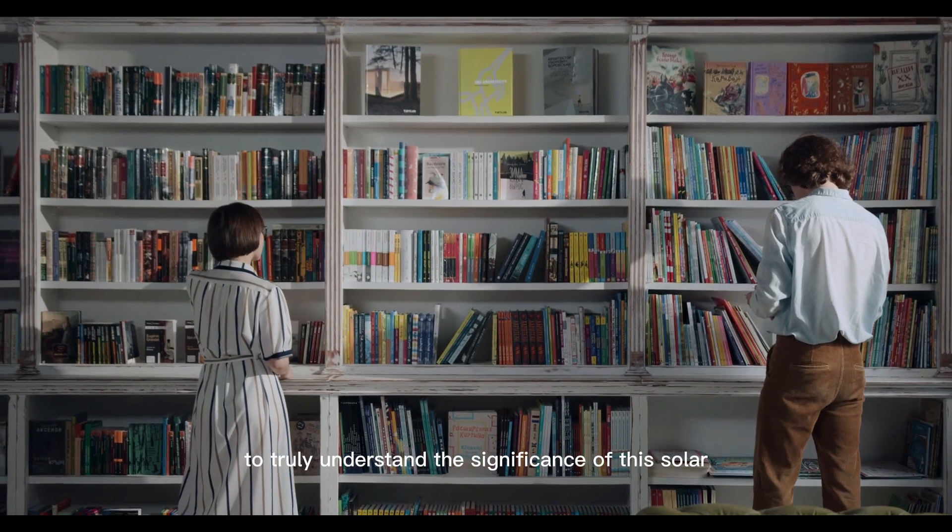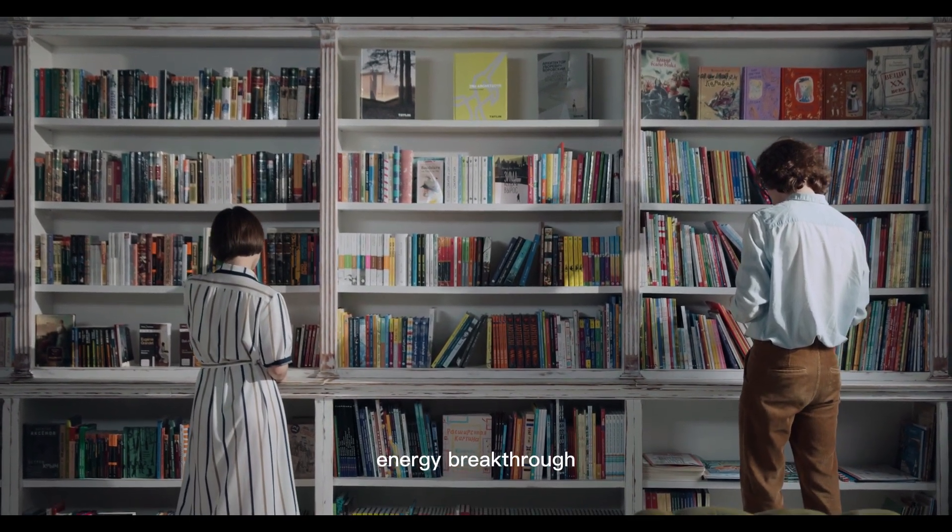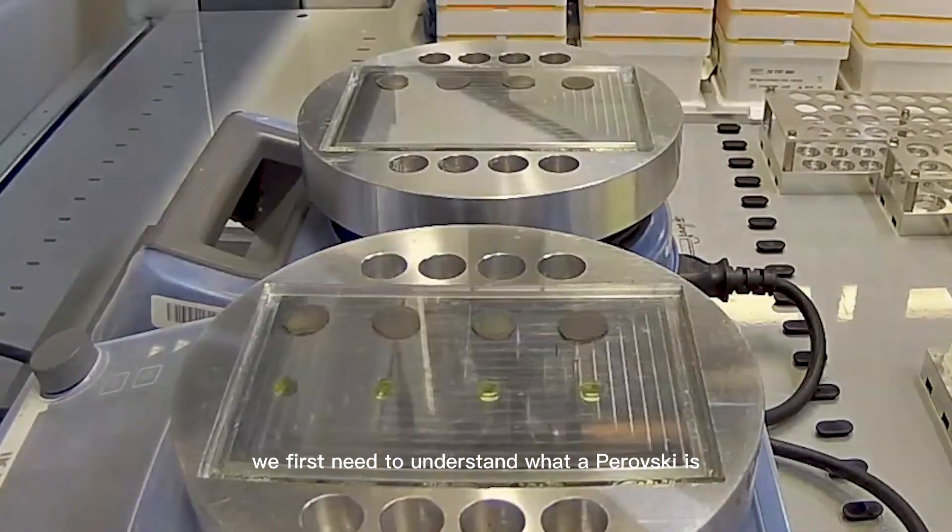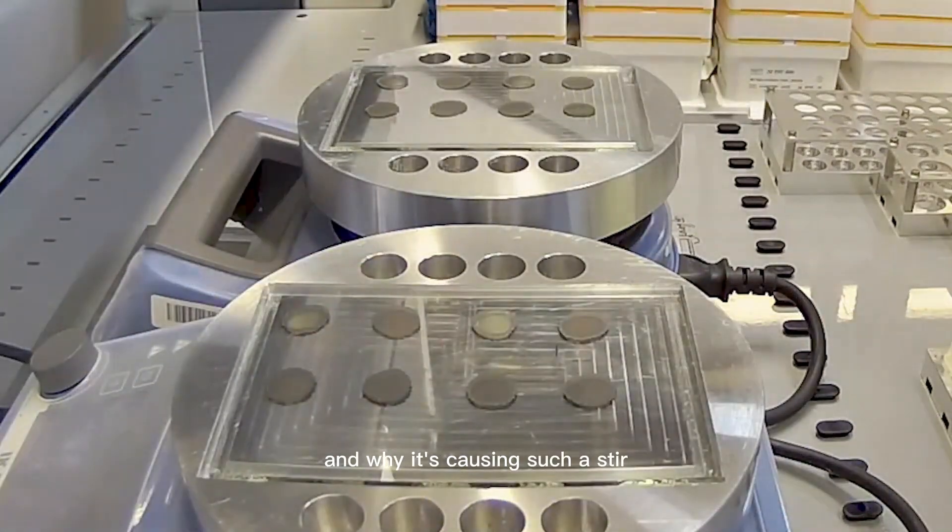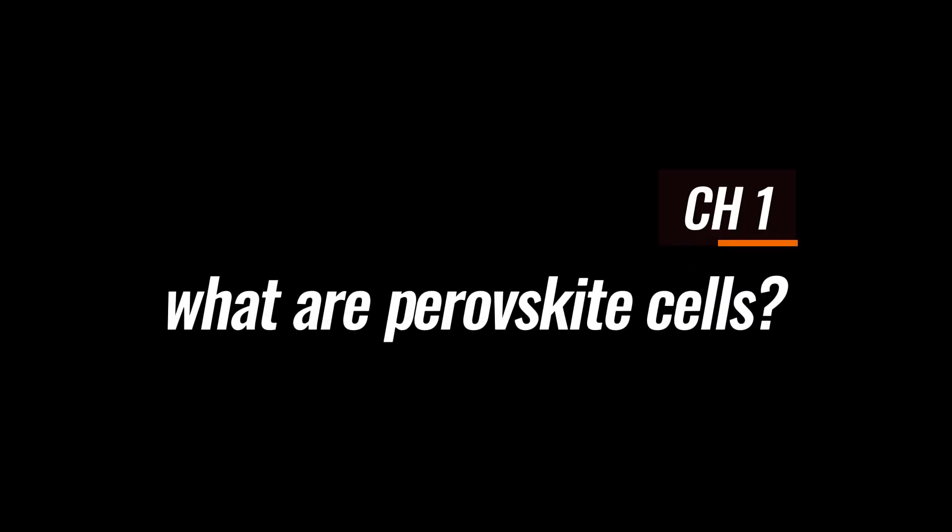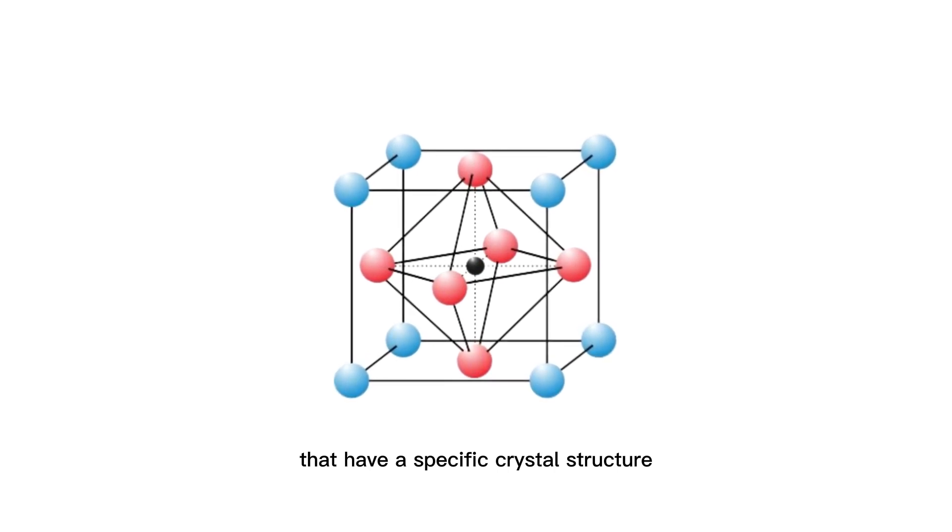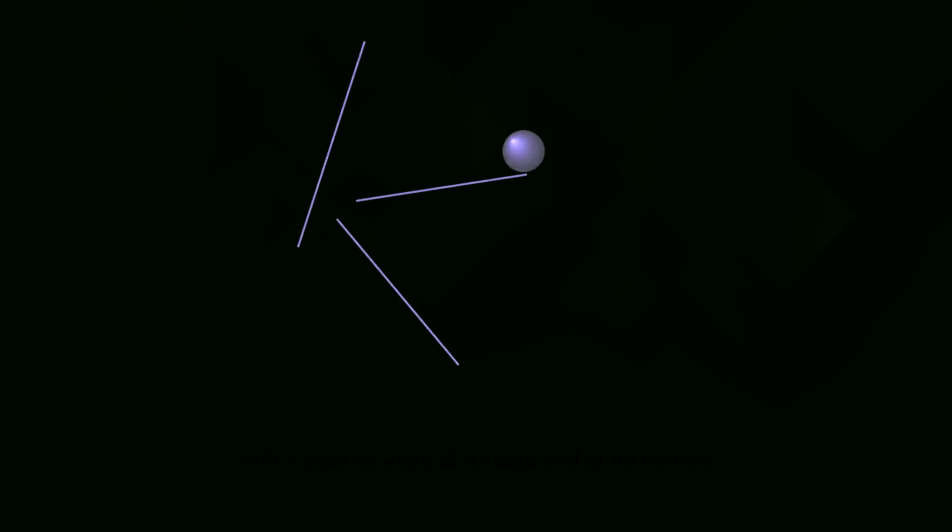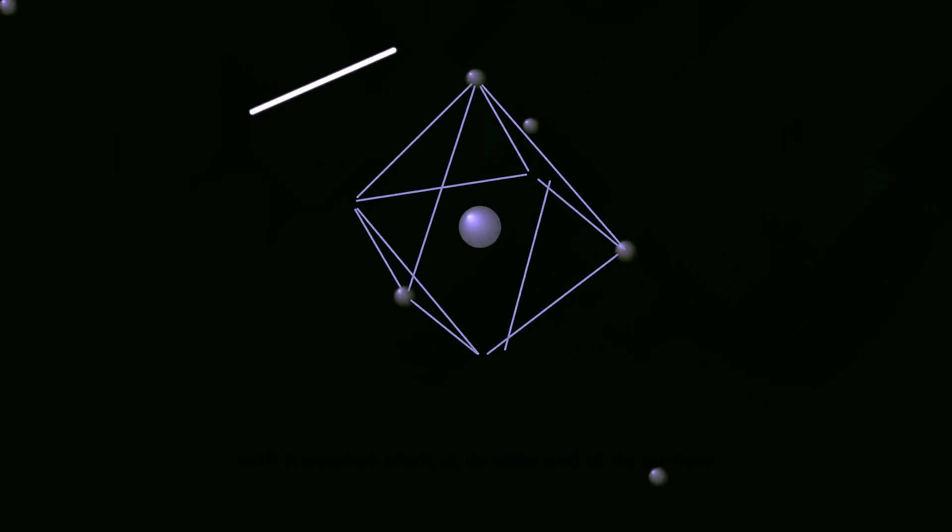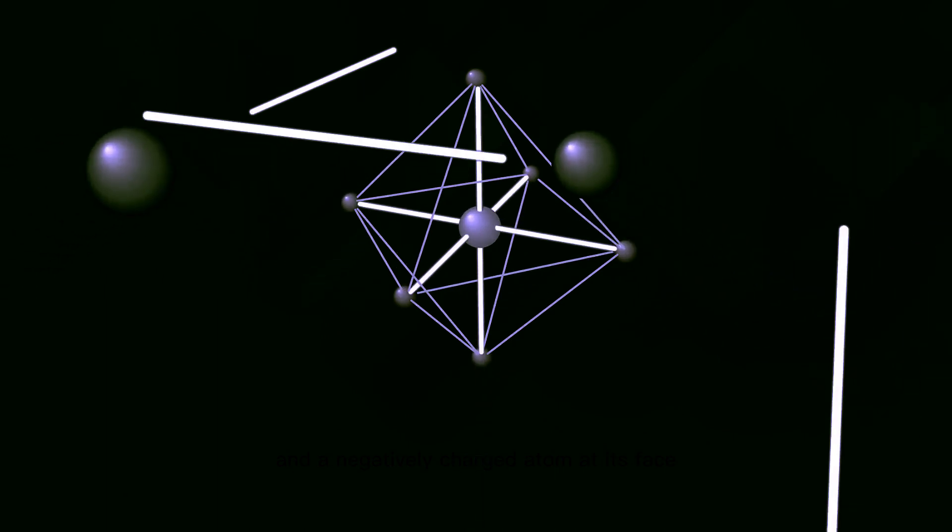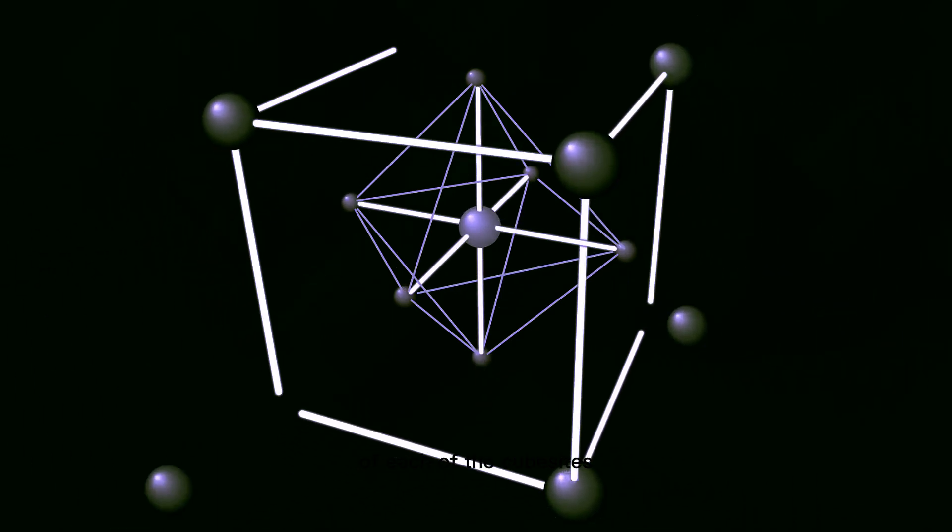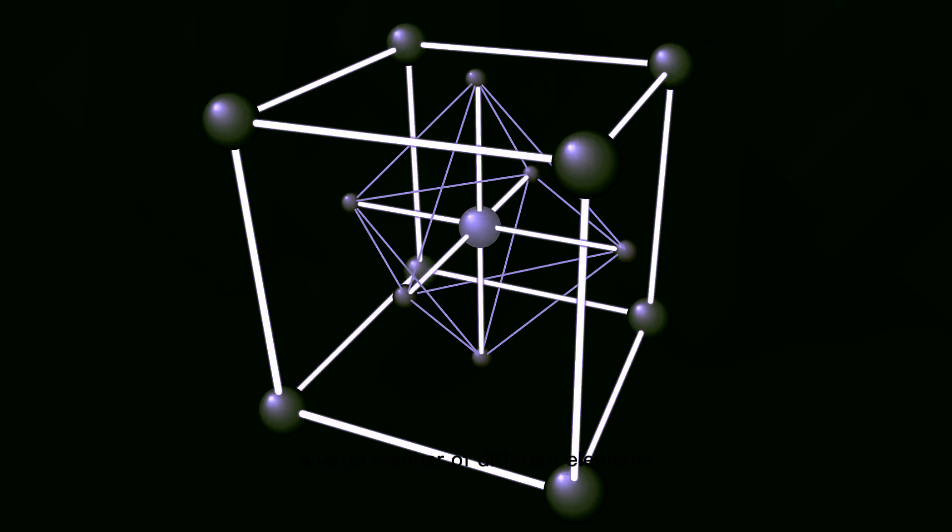To truly understand the significance of this solar energy breakthrough, we first need to understand what a perovskite is and why it's causing such a stir. Perovskite actually refers to a class of materials that have a specific crystal structure, a cubic lattice with a positive atom at its core and corners and a negatively charged atom at the face of each cube side.